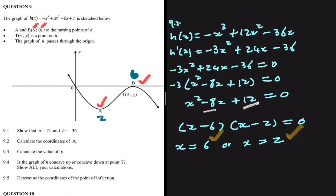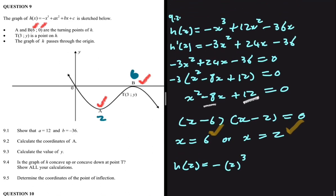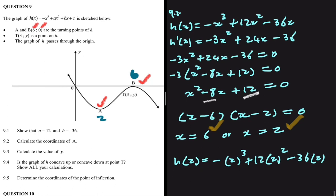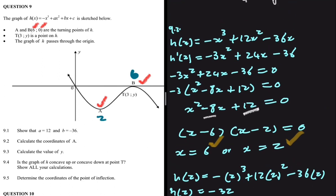We need the coordinates of A, not just the x-value, so we substitute x equals 2 into h(x). h(2) equals minus 2 cubed plus 12 times 2 squared minus 36 times 2. Calculating this gives minus 32. So the coordinates of A are (2, minus 32). That's the answer to 9.2.